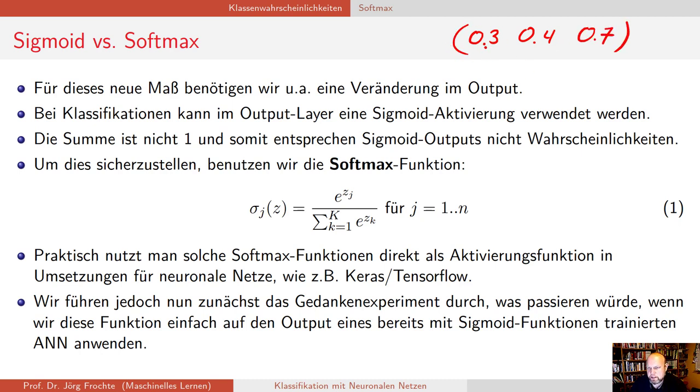Bei einem Verfahren mit einem Sigmoid könnte zum Beispiel sowas rauskommen. Sie haben drei Output-Neuronen und dann kommt raus 0.3 für die erste Klasse, 0.4 für die zweite und 0.7 für die letzte. So, daran sieht man schon was. Wenn ich die Summe darüber bilde, dann kriege ich sowas wie 1.4 und das ist nun mal nicht 1. Das heißt, was immer das hier ist, es sind keine Wahrscheinlichkeiten.